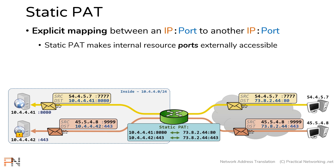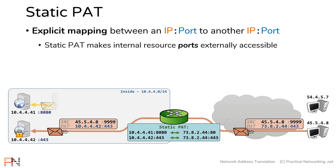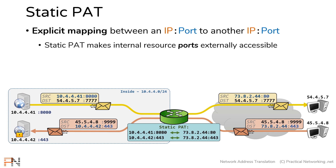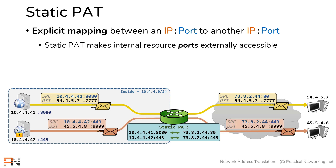When the servers receive those packets, they respond. A response is simply a flipping of the source and destination fields. On the way out, source 10.4.4.1, port 8080, will get mapped to 73.82.44, port 80. For the other packet, the same thing — what was the destination becomes the source, and source 10.4.4.2, port 443, will get translated to 73.82.44, port 443.